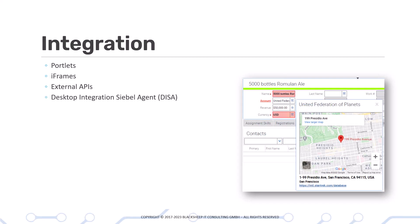The Integration chapter opens the mindset of developers to browser-side integration technologies provided by Siebel or the browser itself, such as portlets and iframes. You will learn how to use external APIs and even integrate with Desktop Integration Siebel Agent, or DISA.